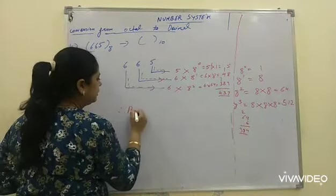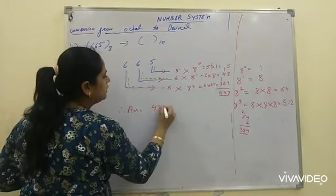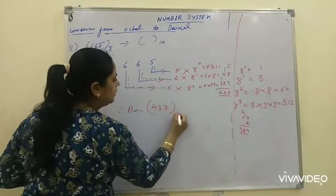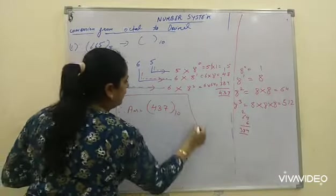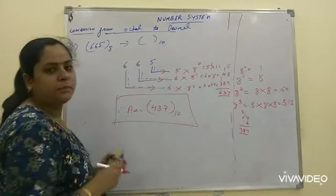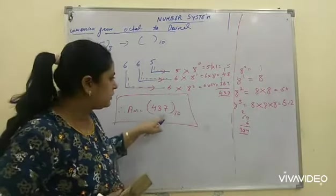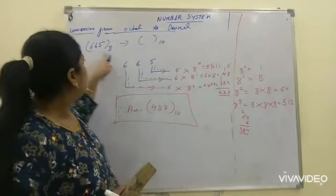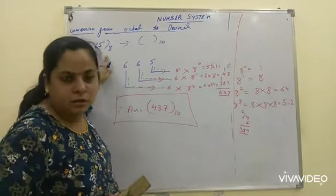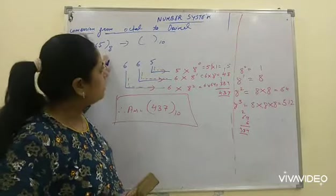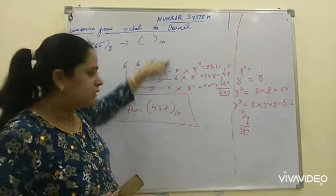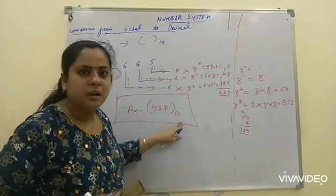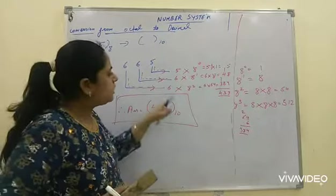That means, therefore, answer is 437 decimal. In previous example, when we converted 437 decimal to octal, we got 665 in octal number system. When we converted it again into decimal, we got the 437 in decimal number system. In this way, we verify the conversion.